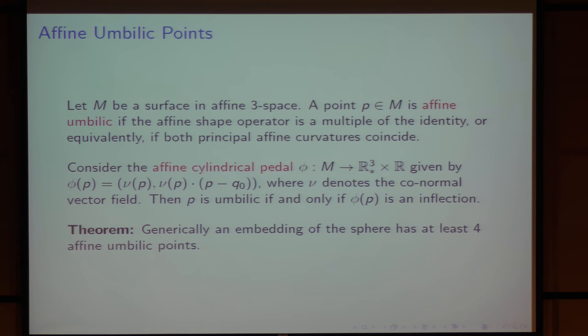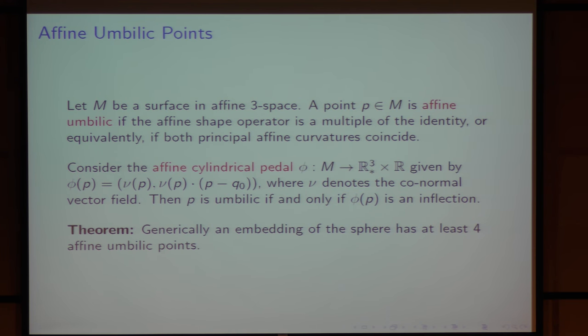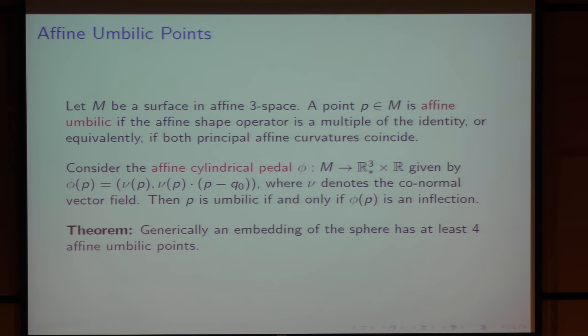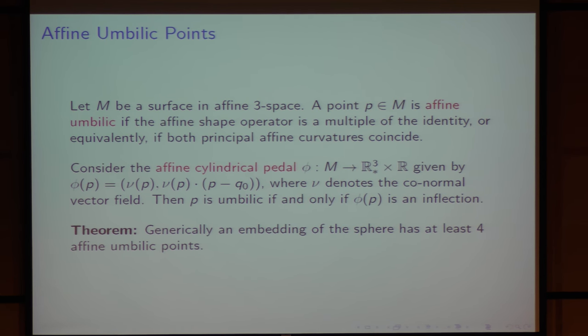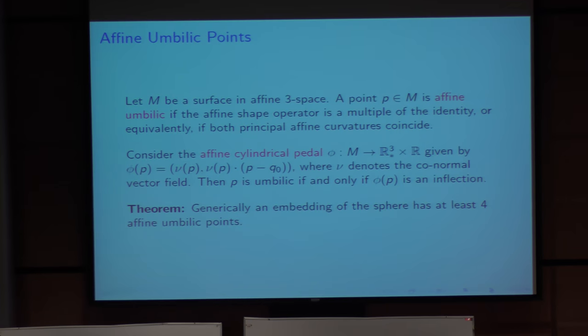We have two other equivalences we cannot discuss here. One is about the stereographic projection, which does not make sense in the affine framework. The other equivalence is about approximation by a sphere — a third-order approximation by a sphere which happens in the Euclidean umbilic case. Here we could think about third-order approximation by a quadric, but this is not true; this does not correspond to affine umbilic. This corresponds exactly to quadratic points. We also have an equivalent theorem: an embedding of the sphere has at least four affine umbilic points.